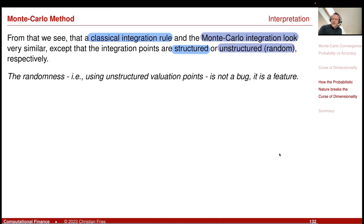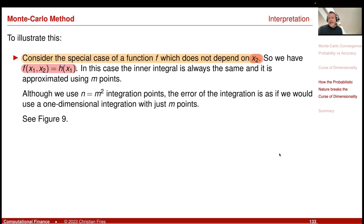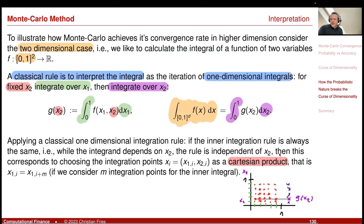That is the trick to break the curse of dimensionality. Consider a special case: the error estimate must hold for all functions f, so you choose a function very unsuitable for this specific method. Consider the case where f does not depend on x_2 — it is actually a function h(x_1). This means all the functions g in the picture are the same along those lines, and you always get the same integral g.